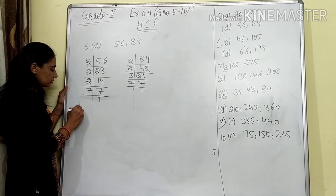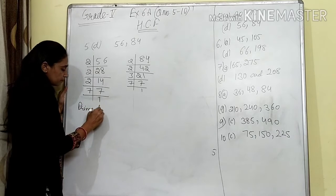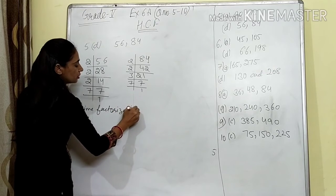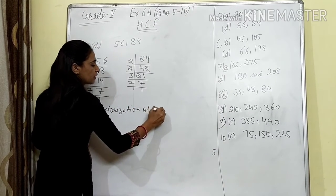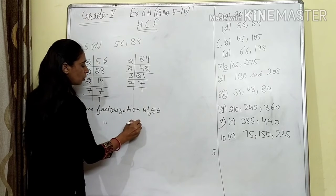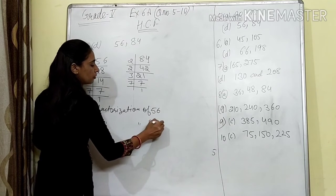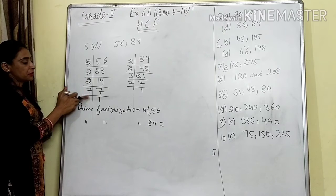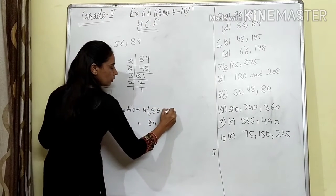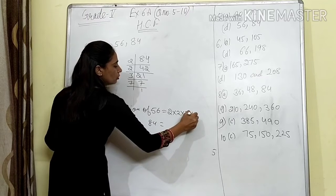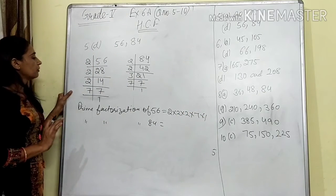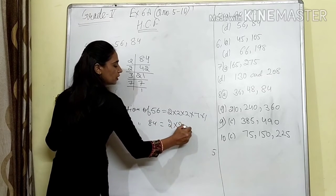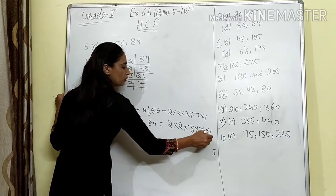Now what are the prime factors — or prime factorization? Prime factorization of 56 is 2 × 2 × 2 × 7 × 1. Prime factorization of 84 is 2 × 2 × 2 × 3 × 7 × 1.